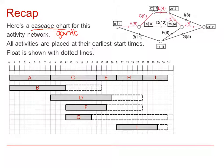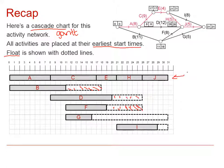All activities are placed at their earliest start times and the float is shown with dotted lines. This space here is known as the float. Remember that the float is the number of days that these activities can be delayed without delaying the whole project. Also remember that this top row here represents the critical path, so anything delayed in the critical path will delay the whole project.